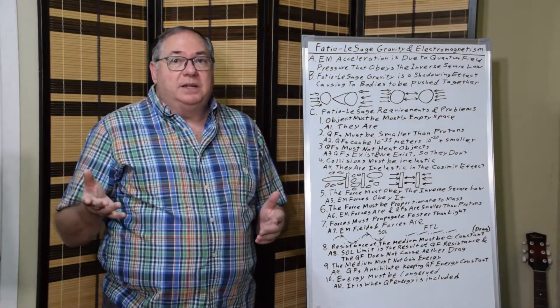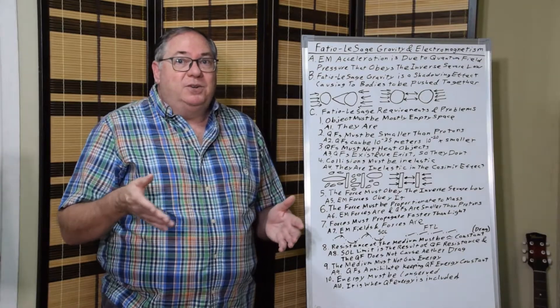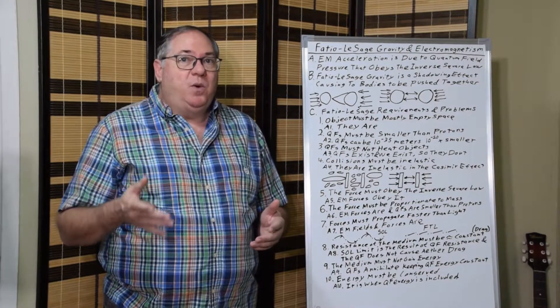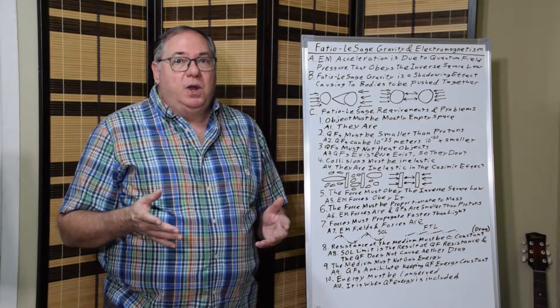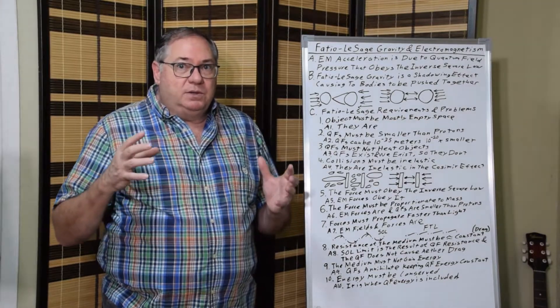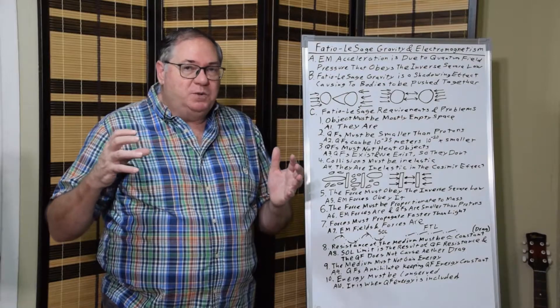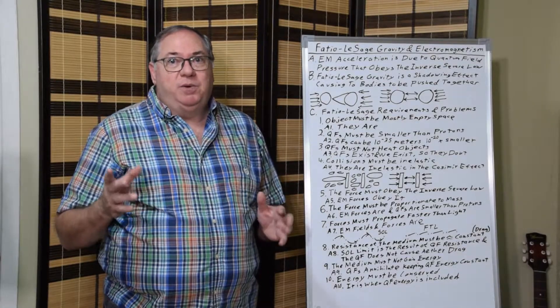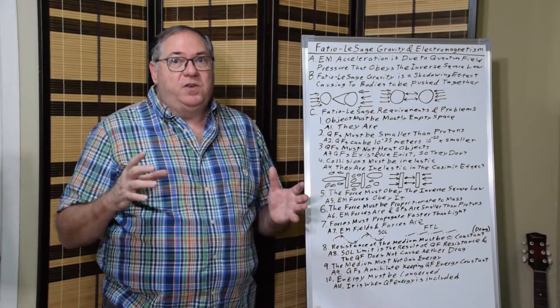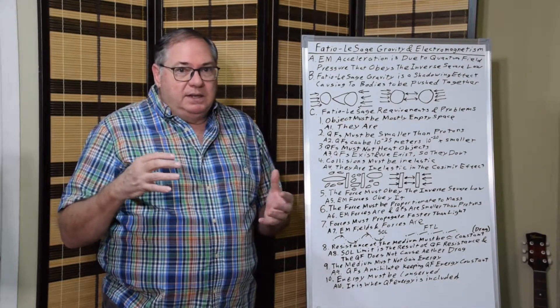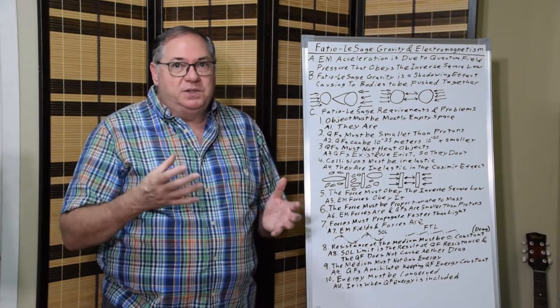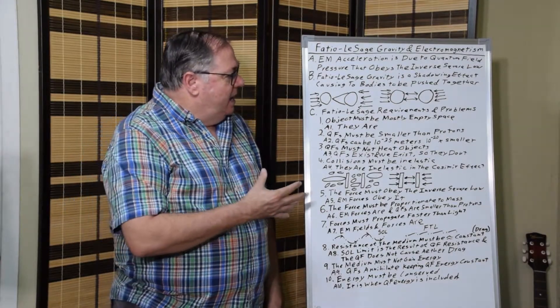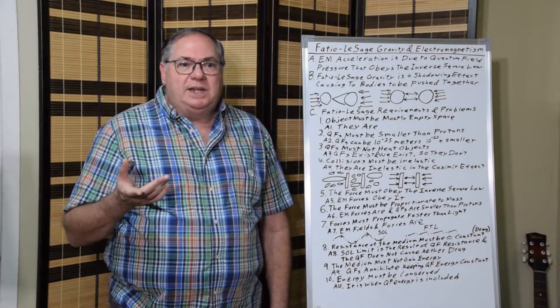And you can compare that to 10 to the minus 15 meters, the scale of protons. So that's 20 orders of magnitude smaller, which means that quantum field pressure is moving through objects quite easily. 20 orders of magnitude is huge. It means that as far as the quantum field goes, the material is hardly there.